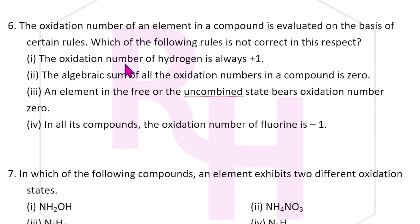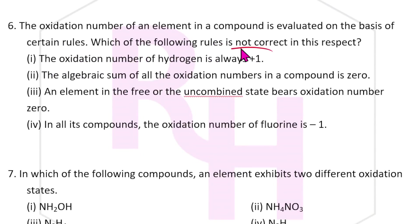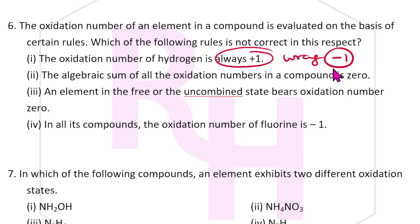The oxidation number of an element in a compound is evaluated on the basis of certain rules. Which of the following rules is not correct? The rule 'the oxidation number of hydrogen is always +1' is wrong, because hydrogen can also exhibit −1 (as in metal hydrides).